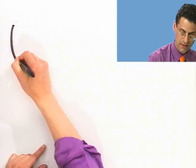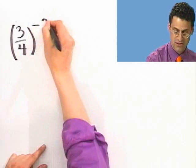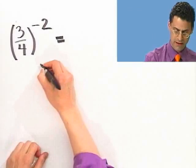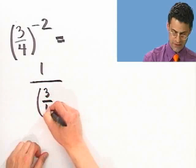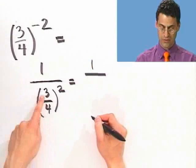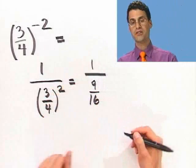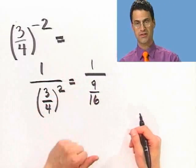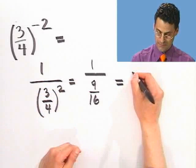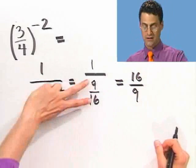One last example: take 3 fourths and raise that whole thing to the minus 2 power. First we flip, giving 1 over (3 fourths) squared. Then I can square 3 fourths by squaring each term: 3 squared is 9, 4 squared is 16, giving 9 sixteenths. Now we have 1 over (9 sixteenths) — this is a complex fraction. You take the bottom and flip it and multiply, but you're multiplying by 1, so you just take the reciprocal: 16 over 9. Negative exponents just mean you flip the whole thing to make the exponent positive. That's all.